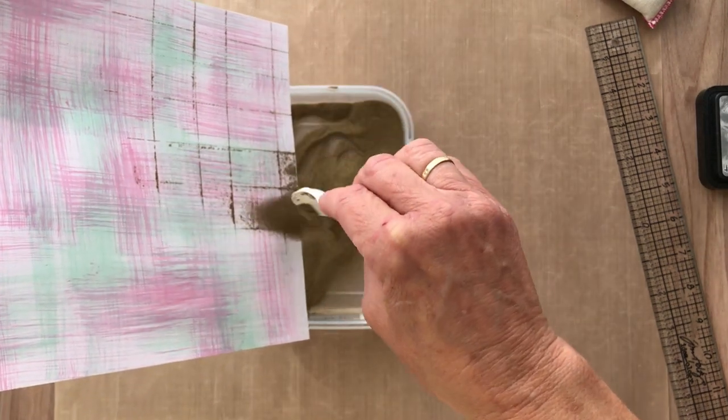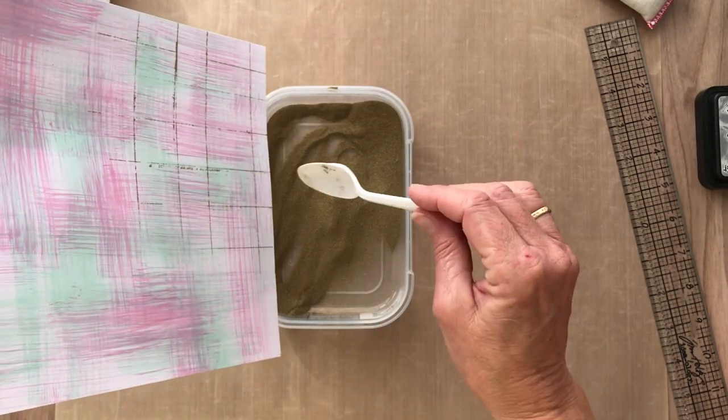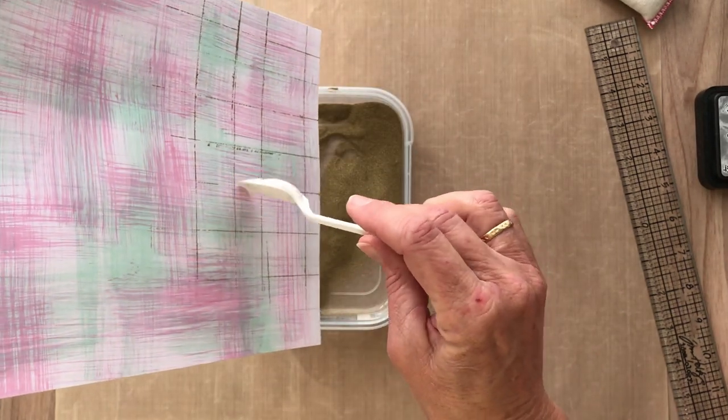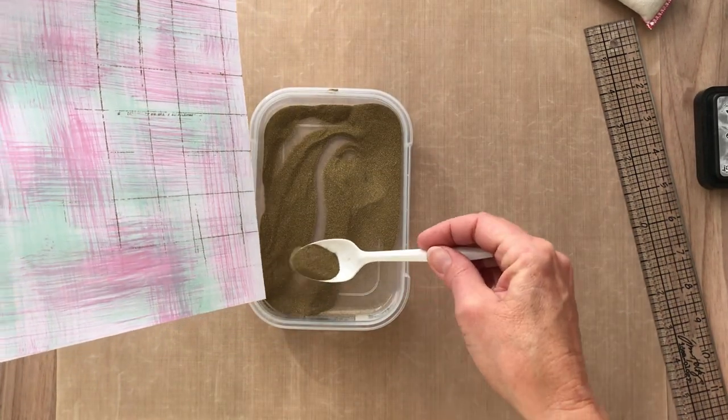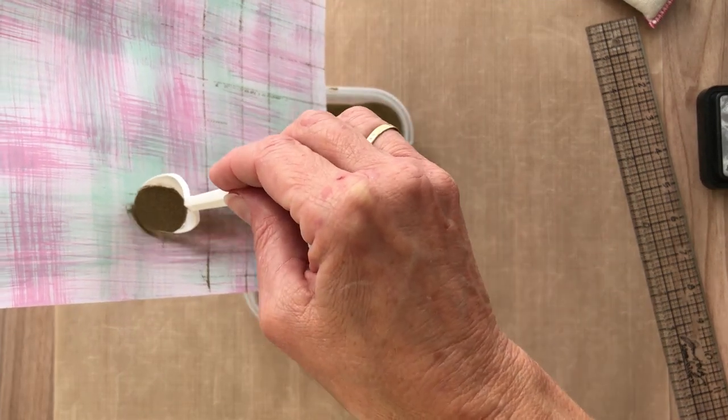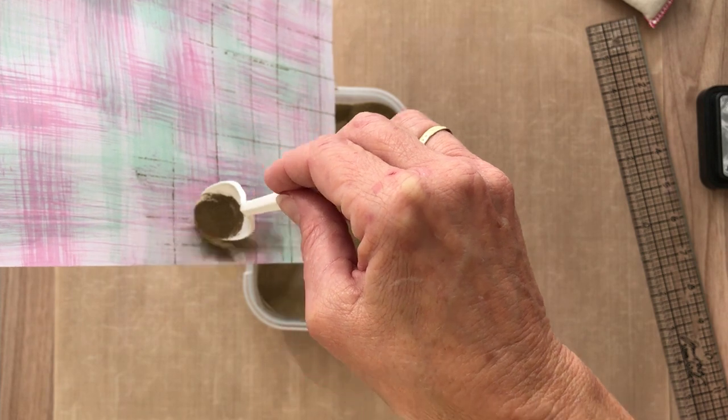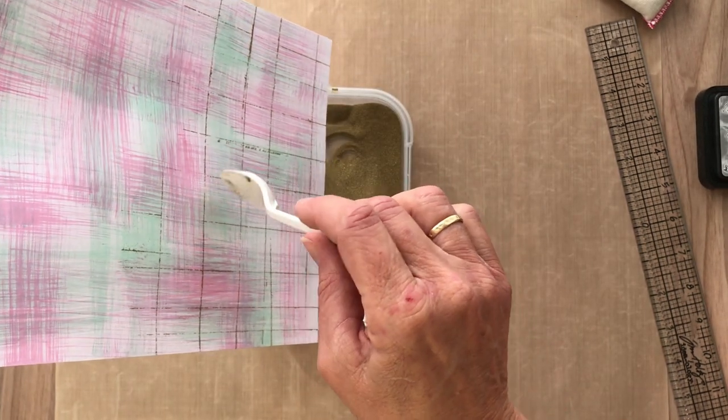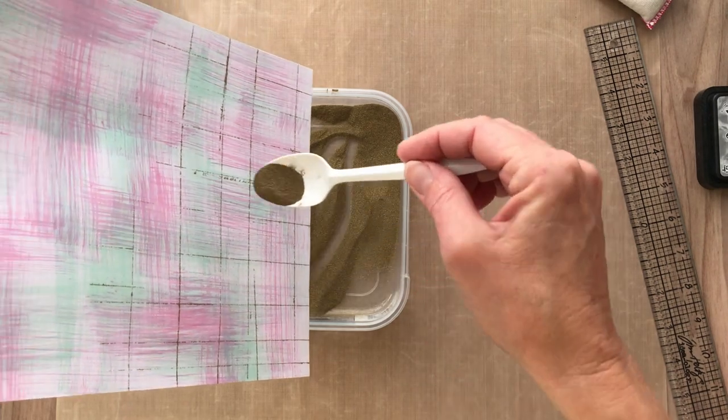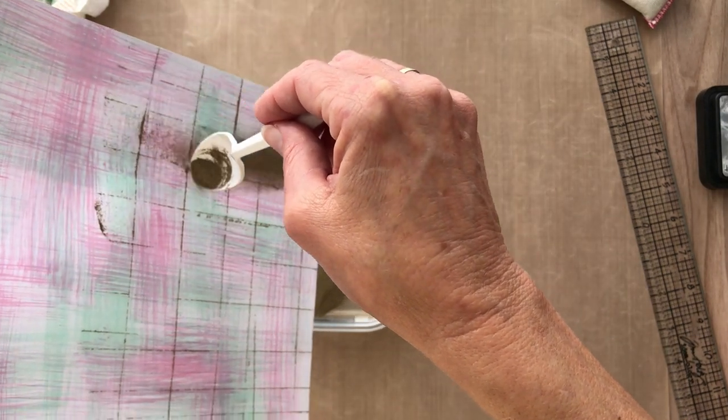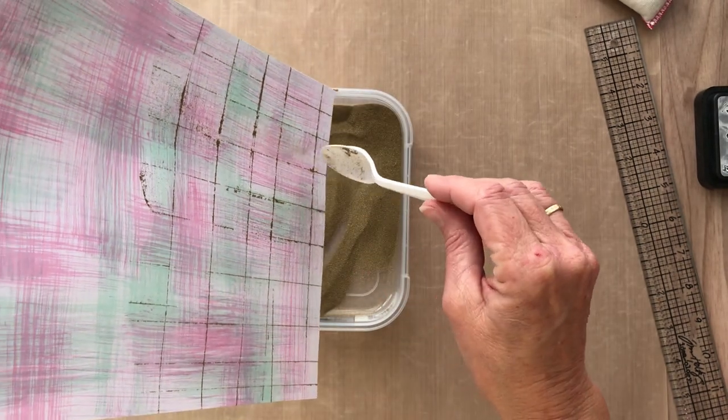I'm just tapping off the excess as I'm going. Hopefully our little anti-static pillow has done its job, but it doesn't really matter anyway with this technique if you do get embossing powder elsewhere, that's fine. They're looking really good those lines.